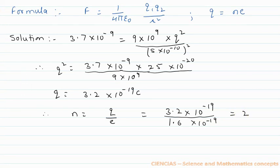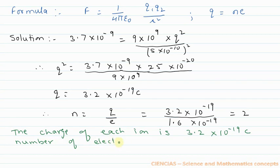So the answer is 2. The charge of each ion is 3.2 × 10^-19 coulomb and the number of electrons missing is 2.